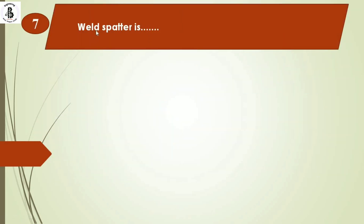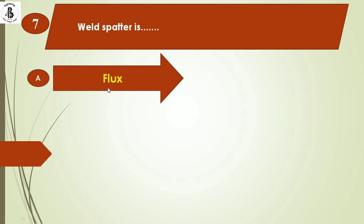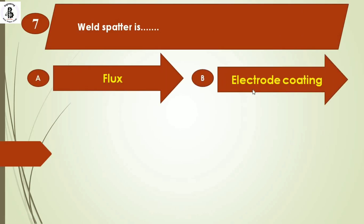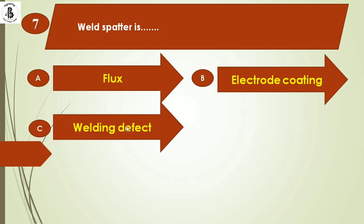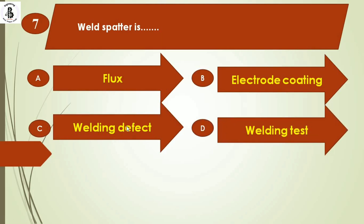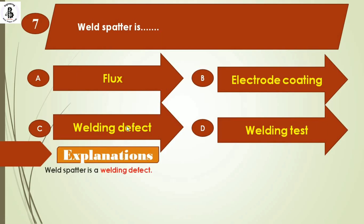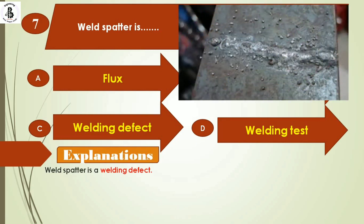Next question: weld spatter is — option A: flux, option B: electrode coating, option C: welding defect, option D: welding test. Weld spatter is categorized as a welding defect. These are droplets of molten metal that fall onto the workpiece surface during welding and are considered one kind of welding defect. Right answer is option C.